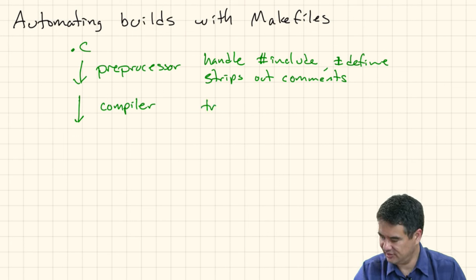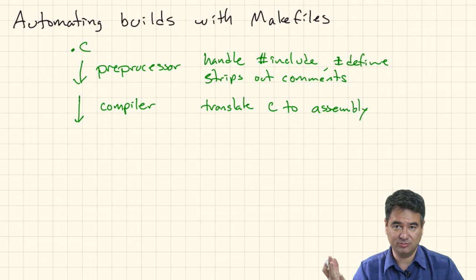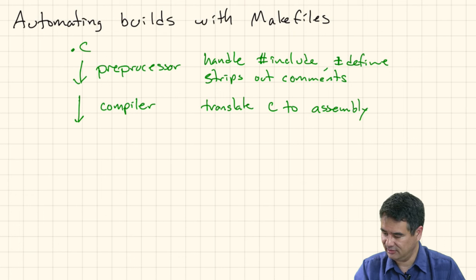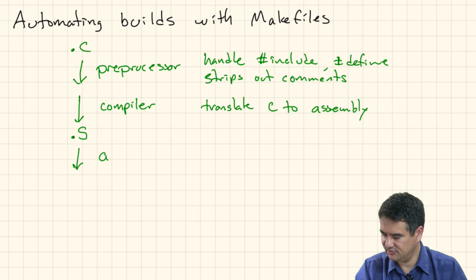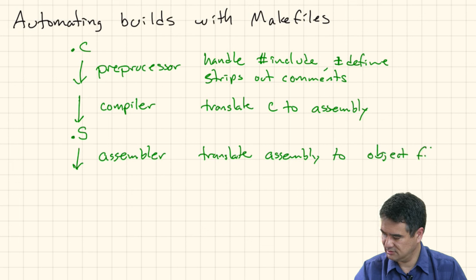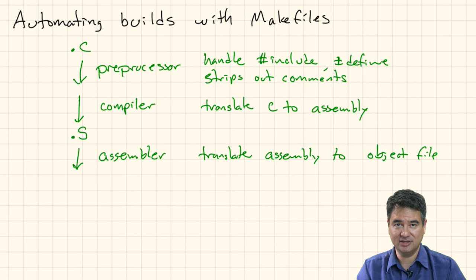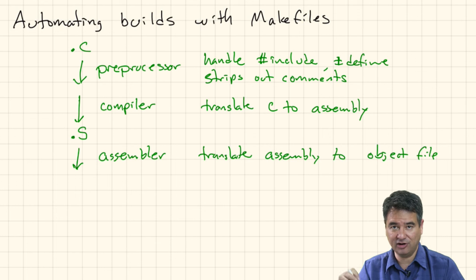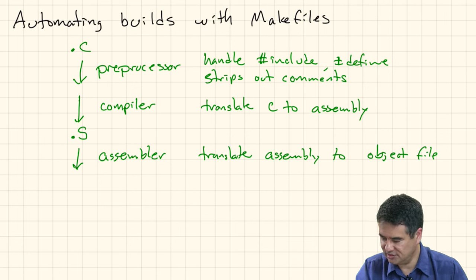After preprocessing, the file goes through the actual compiler, whose purpose is to translate C to assembly. The compiler doesn't actually produce an executable — it just converts the source file into an assembly file with a .s extension. Then that goes through the assembler, whose purpose is to translate assembly to what's called an object file. This object file has nothing to do with objects like in C++ or Java — it's called an object file because it's compiled and targeted for a specific CPU and operating system, but it's not a complete executable. Object file extensions are .o.